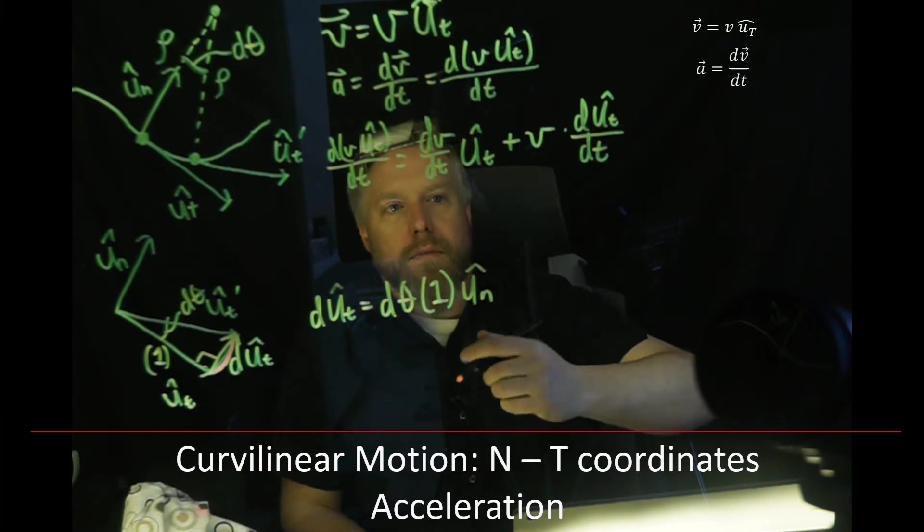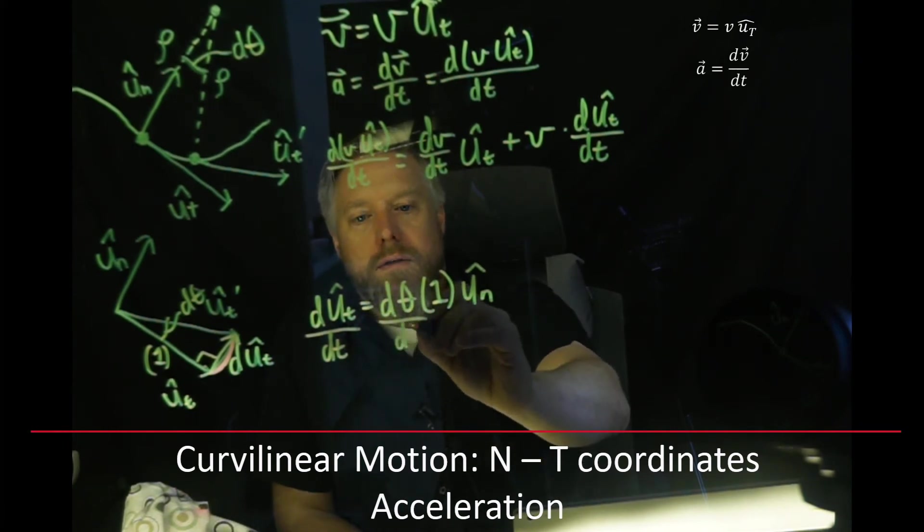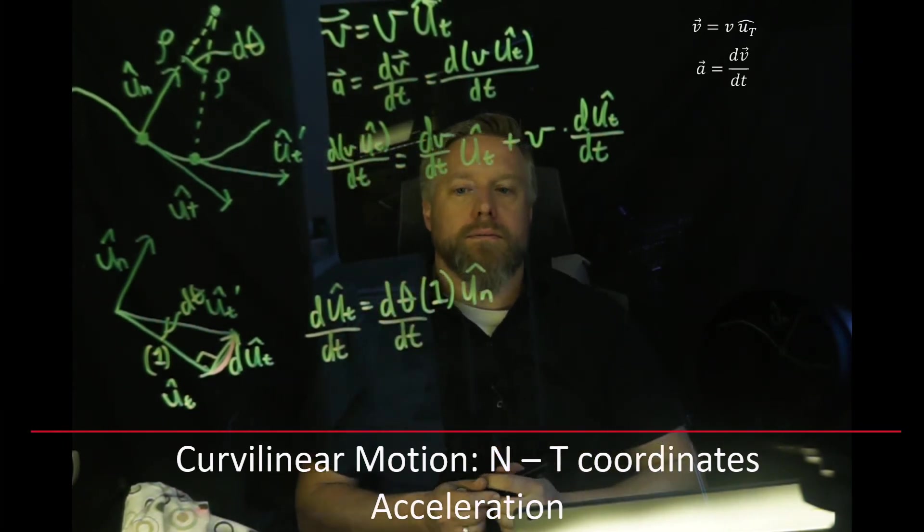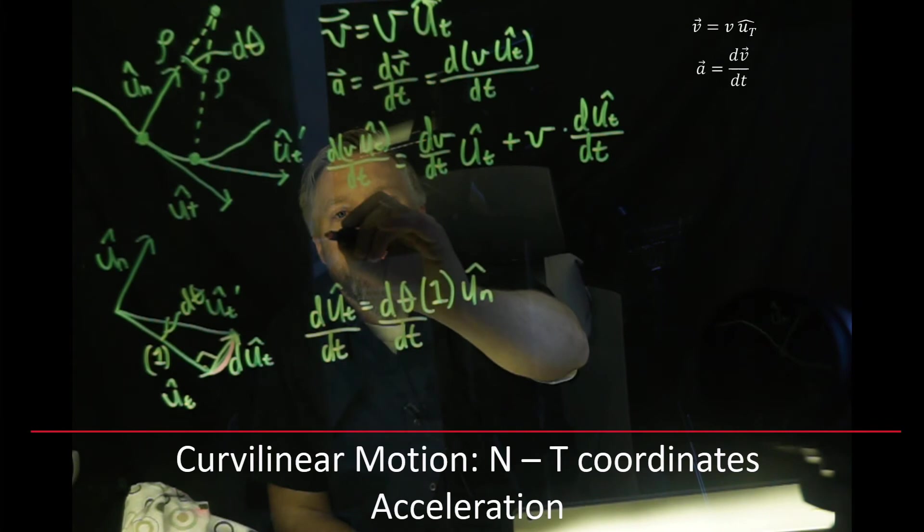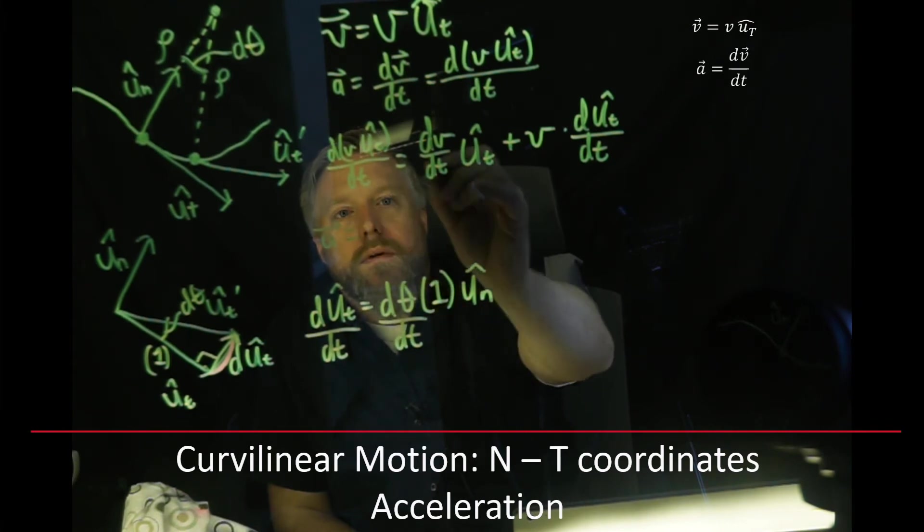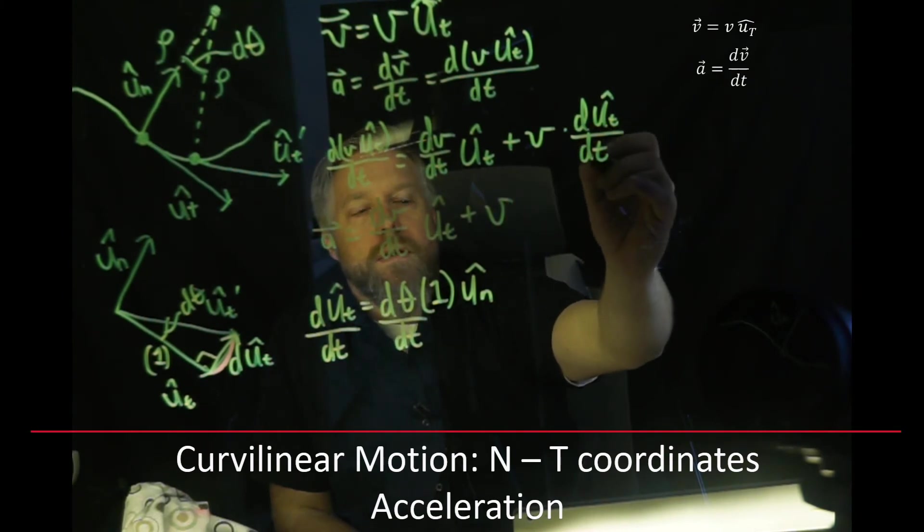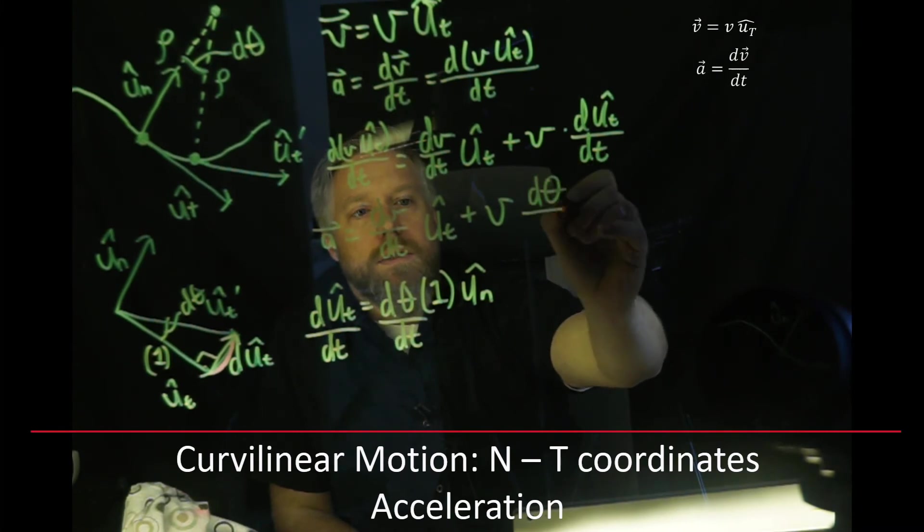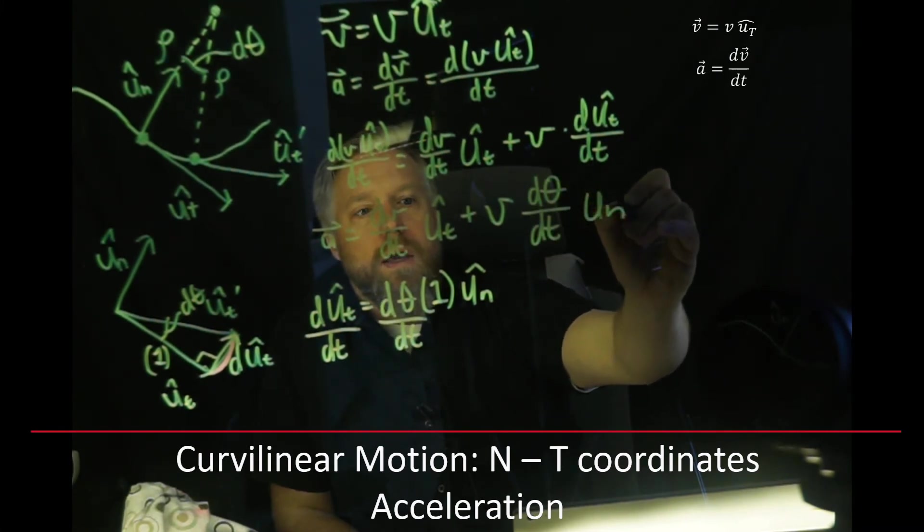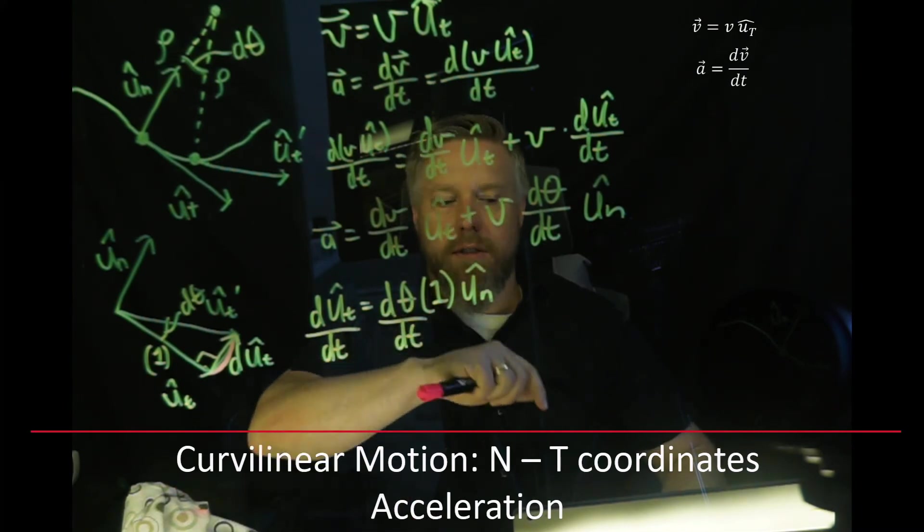And now those are both vectors. We can go ahead and plug those in. And what we end up with is that dUT/dt is equal to dθ/dt times UN. Let's plug that back into our original equation here. And we can see that we have acceleration equals dv/dt times UT plus v times dUT/dt, which we know is dθ/dt, UN. I'm going to pause for a minute and clean up this area.